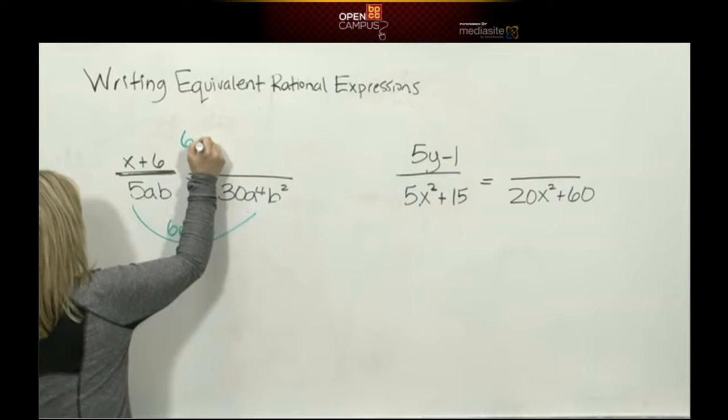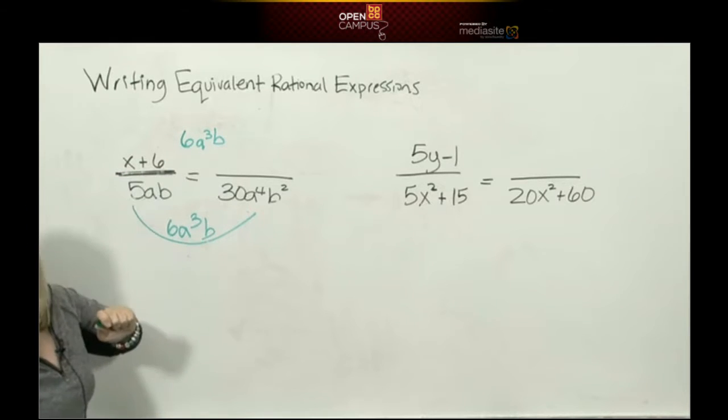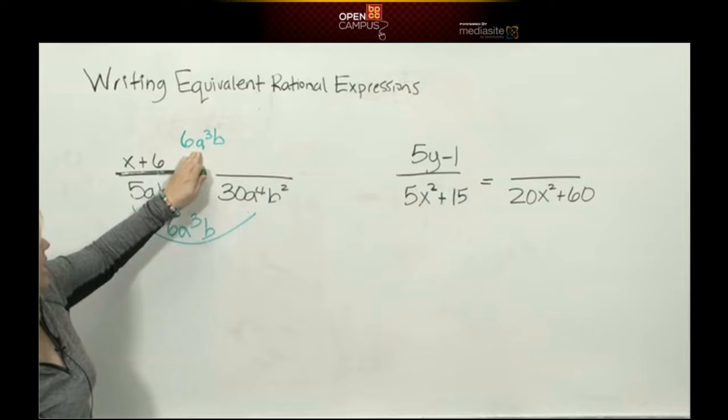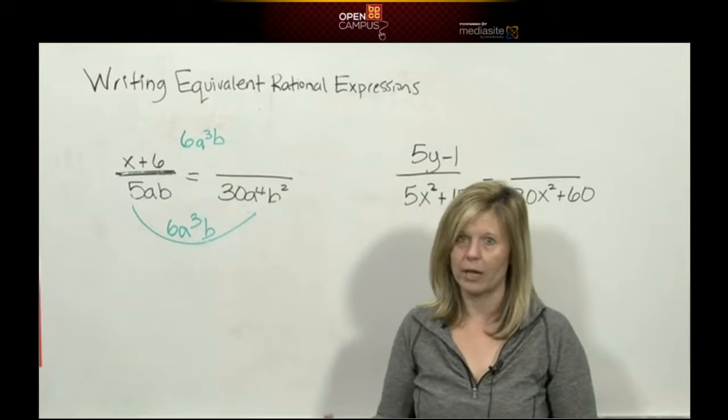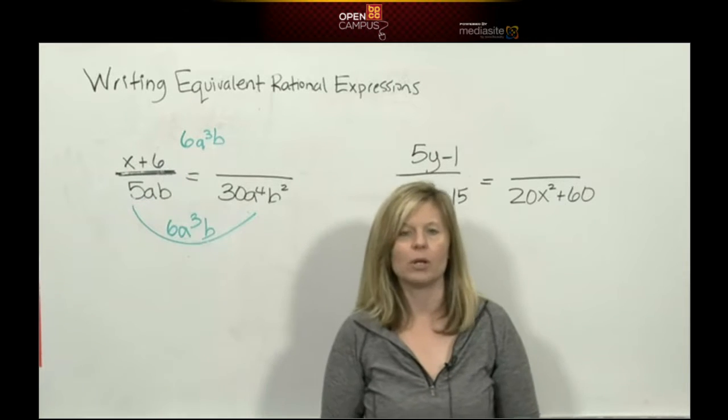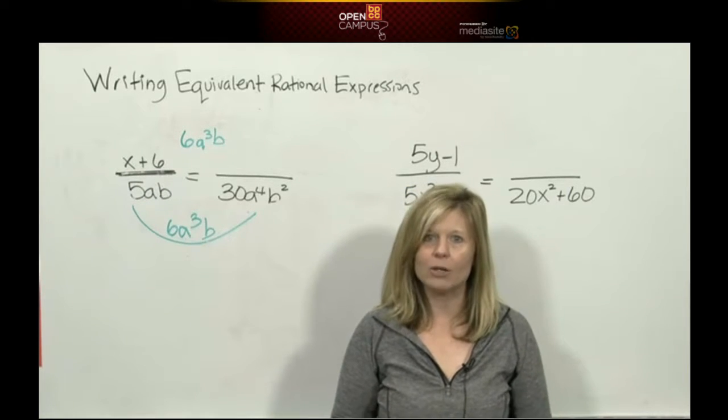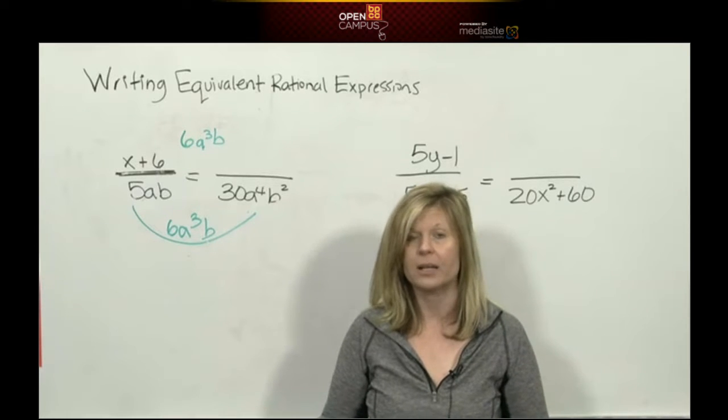So we're going to have to take our numerator, x+6, and multiply it by this 6a³b. Now here's where we use everything we've been learning. This is a binomial times a monomial, and the way we multiply a binomial times a monomial is we use our distributive property.